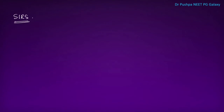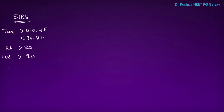The first one is SIRS, that means Systemic Inflammatory Response Syndrome. In this, there is a temperature of more than 100.4 degrees Fahrenheit or less than 96.8, and respiratory rate is more than 20, and heart rate is more than 90, and WBC is more than 12,000 or less than 4,000, or there is more than 10 percent of bands, and PCO2 is less than 32 mmHg.